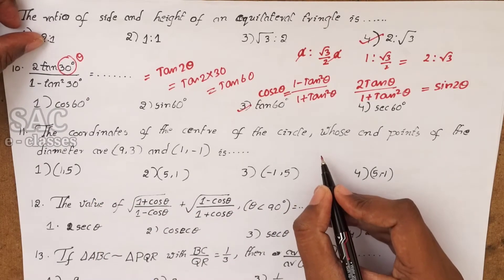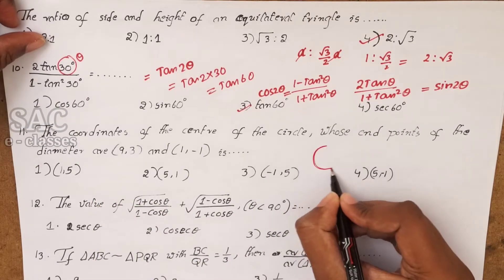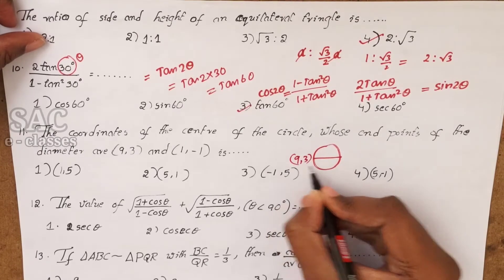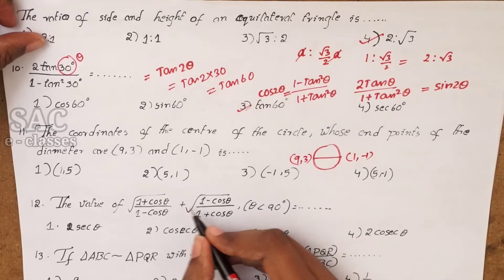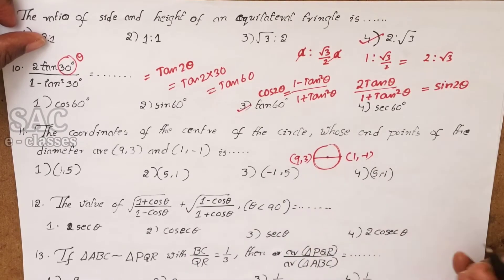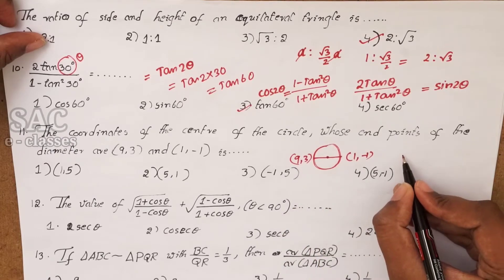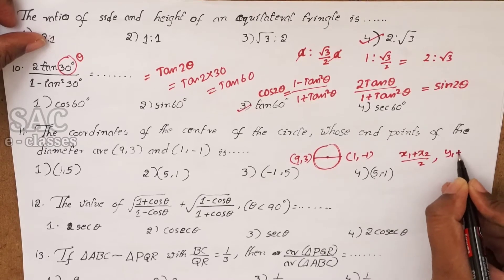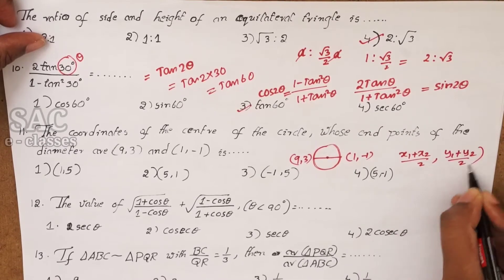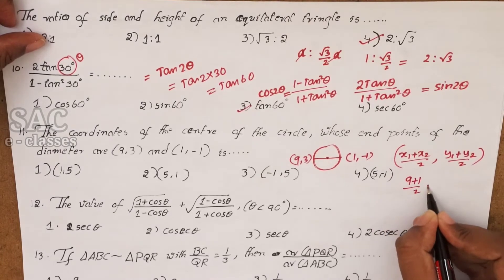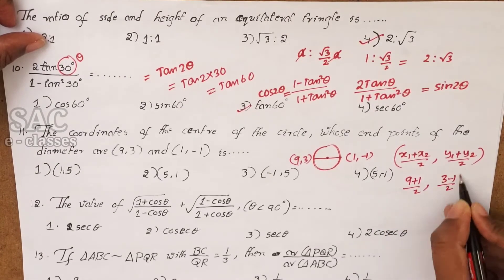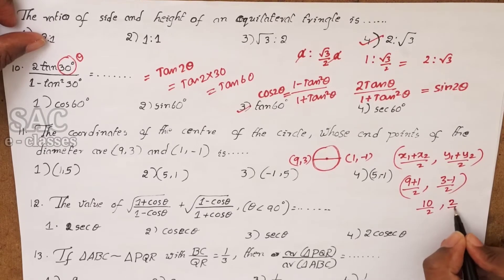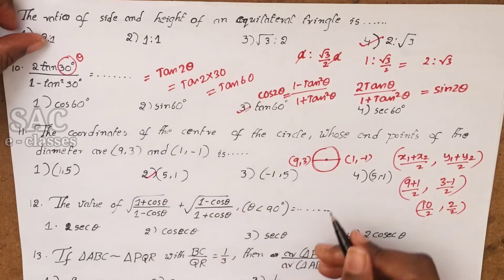Find the coordinates of the center of the circle whose diameter endpoints are (9, 3) and (1, 1). The center is the midpoint of the diameter. Using midpoint formula: (x1+x2)/2, (y1+y2)/2 = (9+1)/2, (3+1)/2 = 10/2, 4/2 = (5, 2). So 5 comma 2 is the answer.